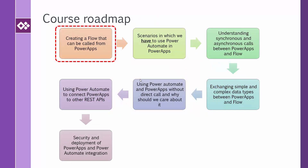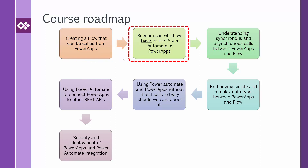Let's look into the course roadmap. We start by creating a flow that can be called from Power Apps — something you may have done before. The only difference is that here we use a Power Apps V2 trigger. But this is not the main direction of the course. We need to know why we need Power Automate in Power Apps before learning how to do it, so we look into the scenarios in which we have to use Power Automate, and sometimes there are workarounds, sometimes Power Automate is the only way.